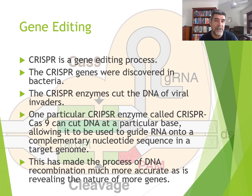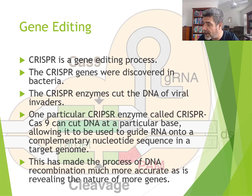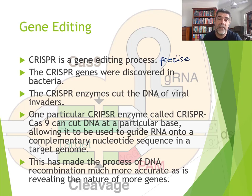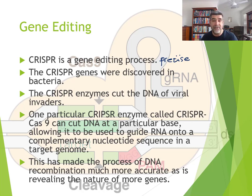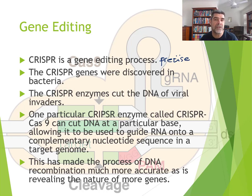CRISPR is a gene editing process. Of all of the processes that we have and will look at associated with biotechnology, this one is the most precise. So when you're looking for precision, CRISPR is the one that you look for. It's much better than trying to look at two individual males and females that kind of have the qualities that you want, and then get them to breed if you can organise that.